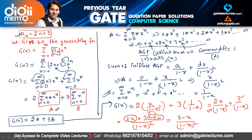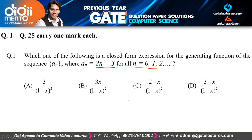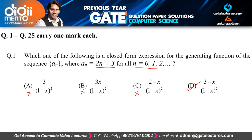Checking against the options: the first three options do not match, but option D matches. So D is the correct answer for this question. This question is not at all tricky — they are simply asking whether you know what a generating function is, and if you do, you can easily solve it in the examination hall.